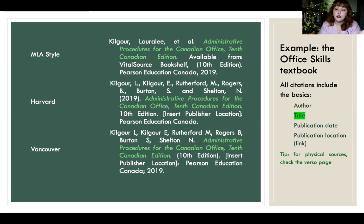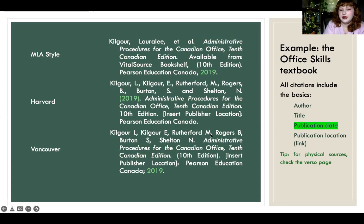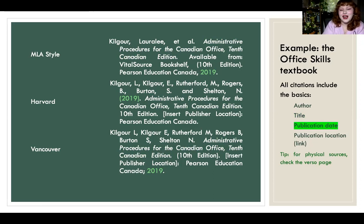If you've got an article in a magazine, same idea. Publication date is the next element, and again there are a couple of different ways to do this. In MLA, the date is just at the end. For Harvard, it's further up because it's more often used in humanities — moved up and placed in brackets. In the Vancouver style, the date is again at the end but with a semicolon instead of a comma. Just minor differences per style.